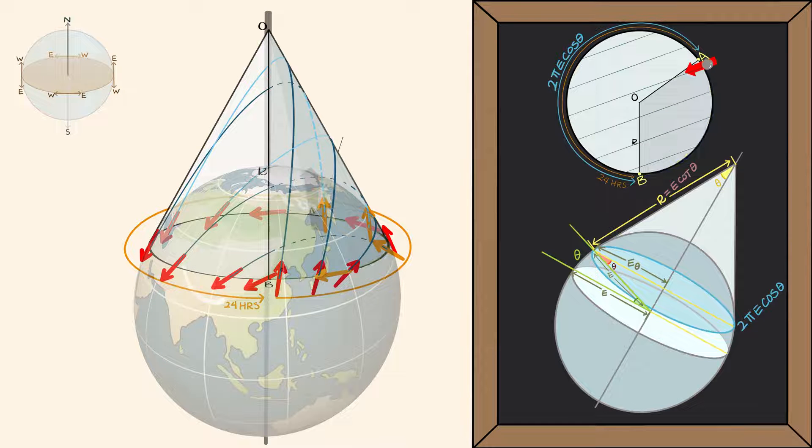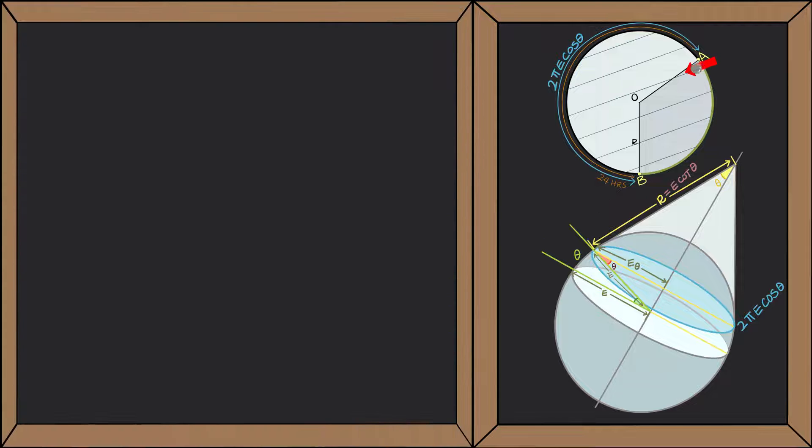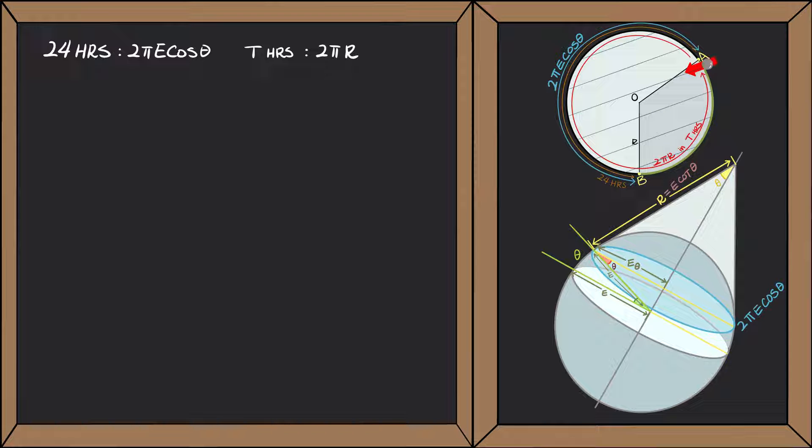The longer the arc length, the more time needed to complete the turn. Let's put this into numbers. If it takes our pendulum 24 hours to travel the length of 2 pi E cos theta, and if it takes our pendulum t number of hours to travel the length of 2 pi R back to point A, then the following relationship holds.